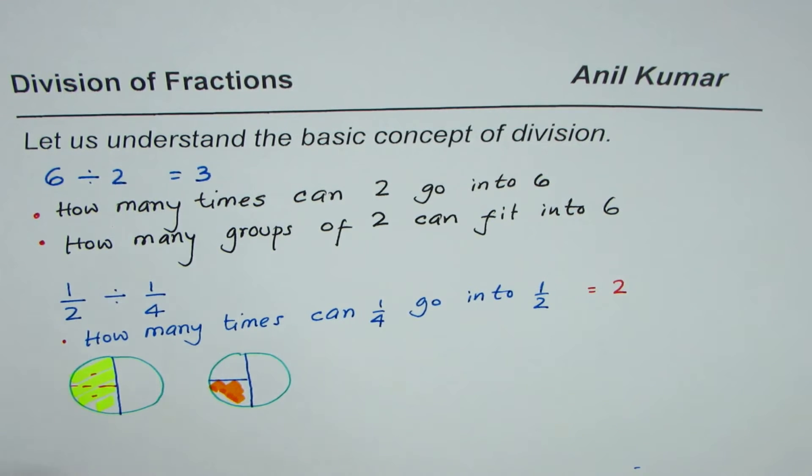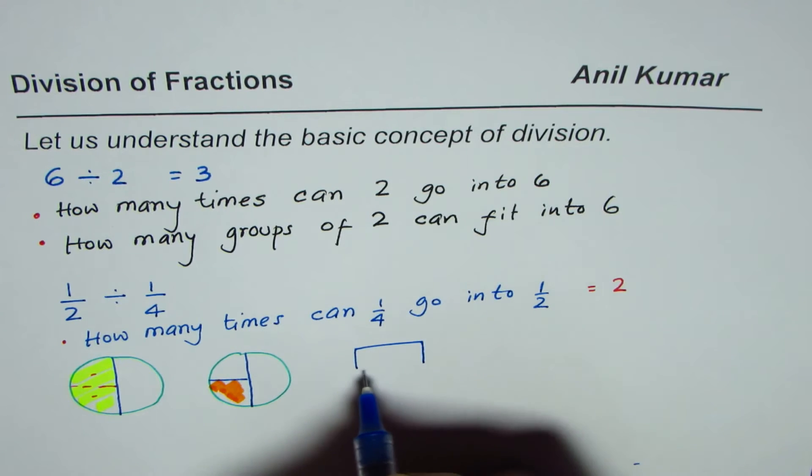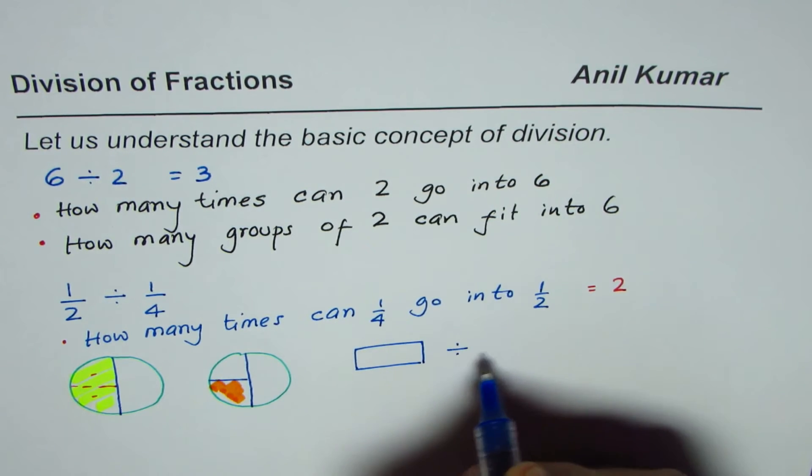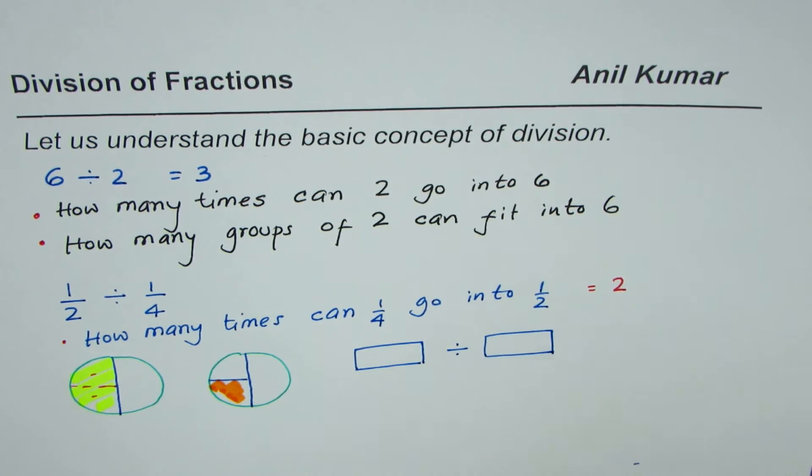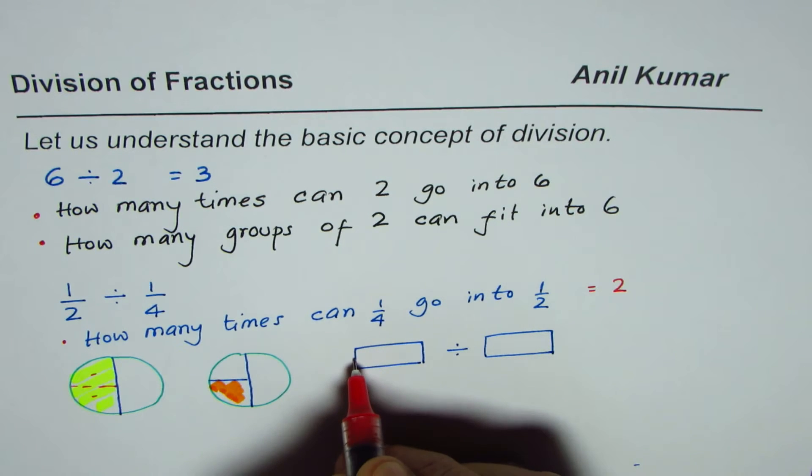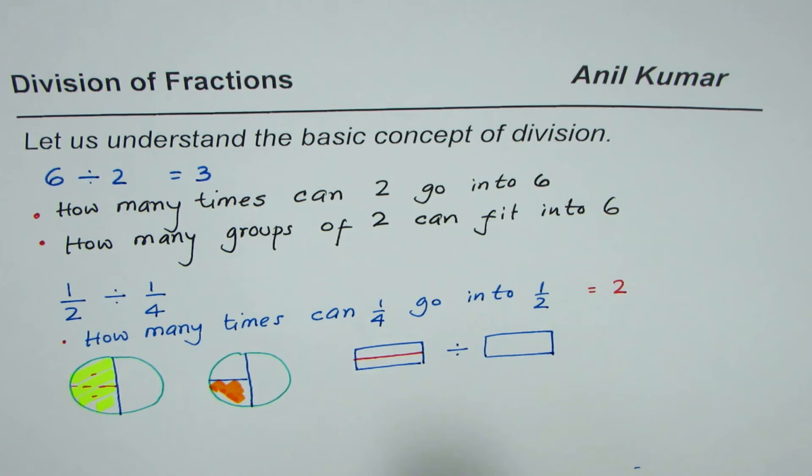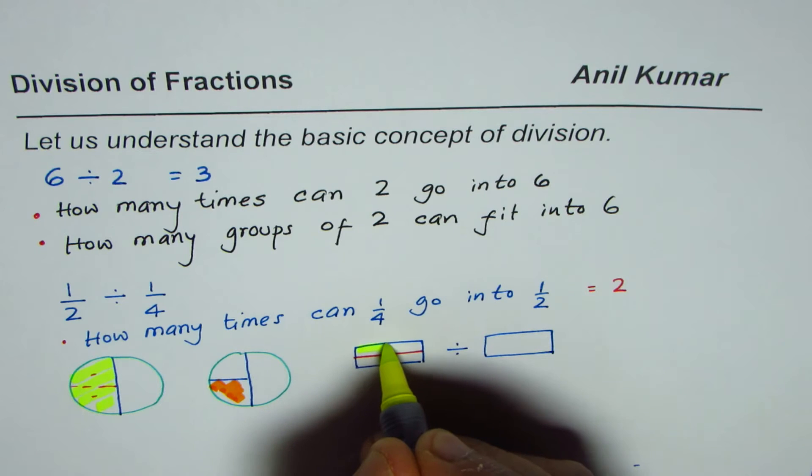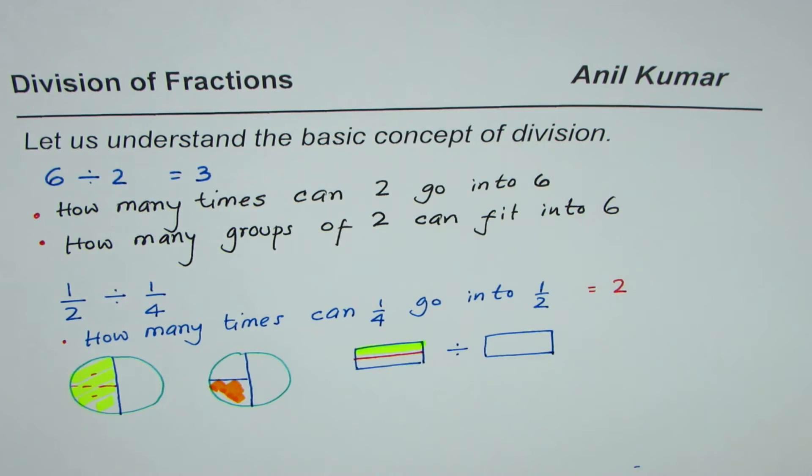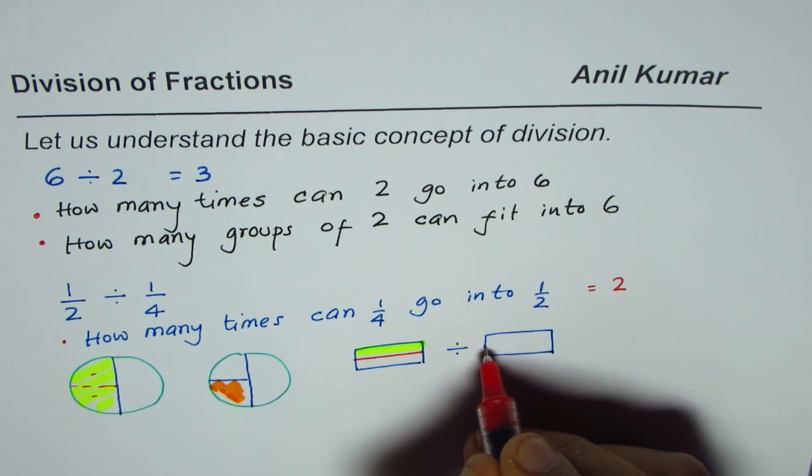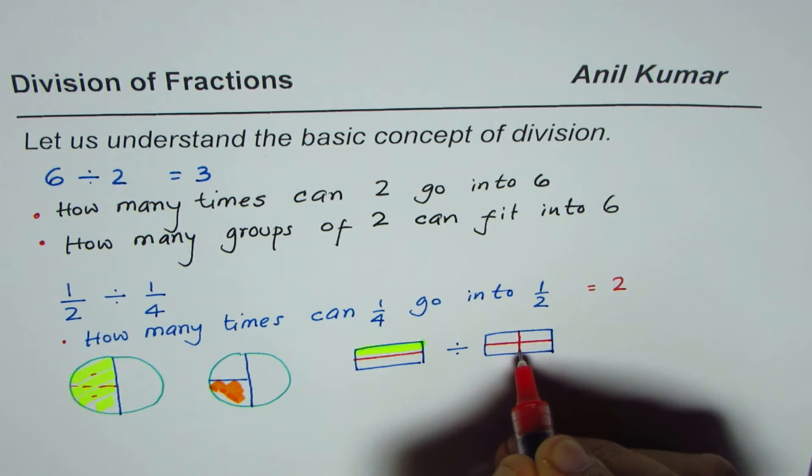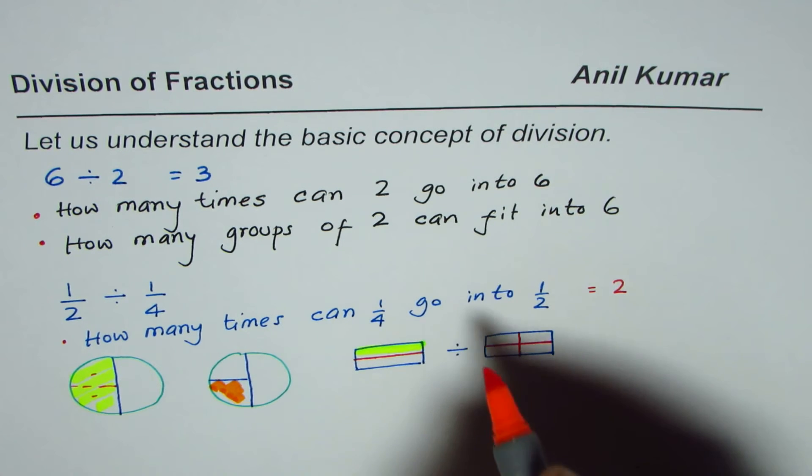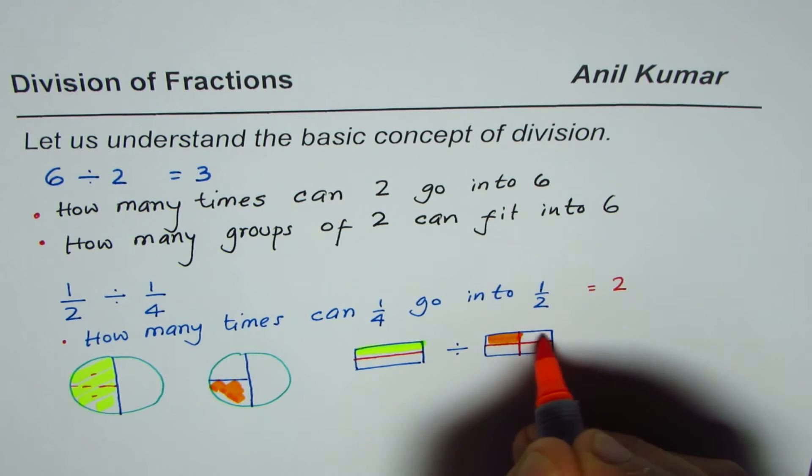Let me make some diagrams to represent this in the form of rectangles. Let us say that I have to divide half by 1 fourth. So, half can be represented by dividing this into half. So, this becomes half of it. So, this is half. And we are dividing this half by 1 fourth. So, 1 fourth is that much? 1 out of 4, correct? So, 1 out of 4.